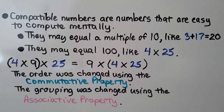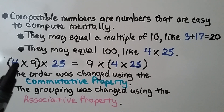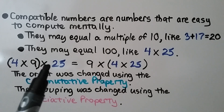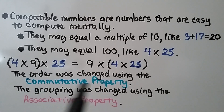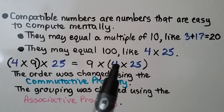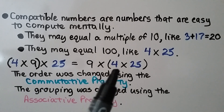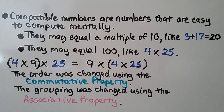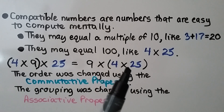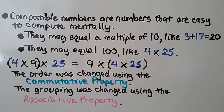So remember, multiples of 10 are 10, 20, 30, 40, 50, and so on. Compatible numbers may also equal 100, like 4 times 25. Here we have 4 times 9 in parentheses times 25. We can change the order using the commutative property, and the grouping was changed using the associative property — instead of grouping 4 times 9 together, now we're grouping 4 times 25 together. We can think of 4 quarters in a dollar: 4 times 25 is 100. We multiply that times 9 and get 900.